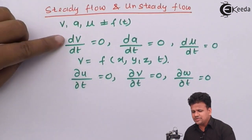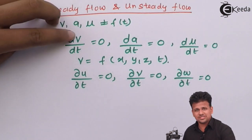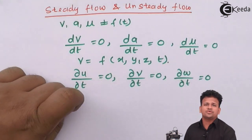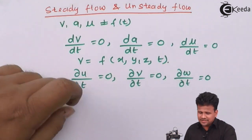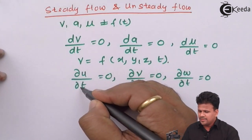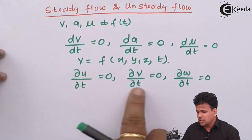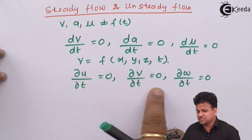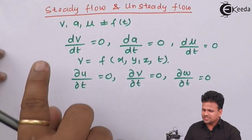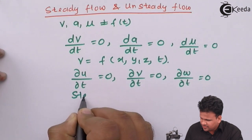Now why do we use partial derivatives here? Because velocity is a function of one or more variables — that is why we use ∂ while considering the velocity components along the x, y, and z directions. This comprises steady flow.